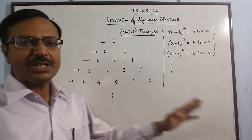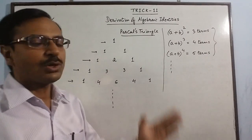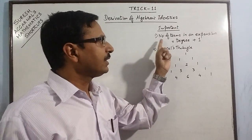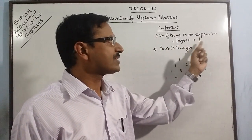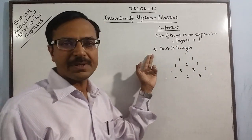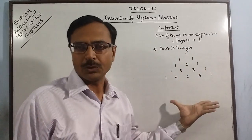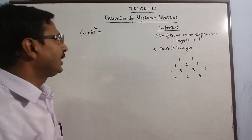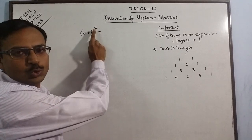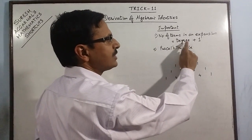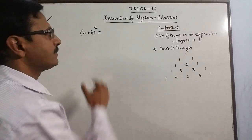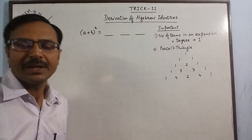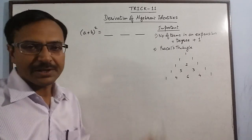Now if we know these two concepts, we can carry on with the derivation of algebraic identities. The first concept is that the number of terms in any expansion is always 1 more than the degree. The second concept is Pascal's triangle. Let us use these two concepts to arrive at the expansion of A plus B whole square. The degree here is 2, so degree plus 1 gives us 3 terms. The expansion of A plus B whole square will have 3 terms only.